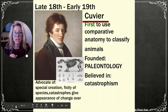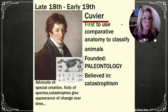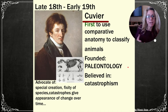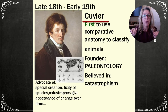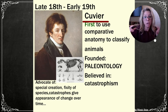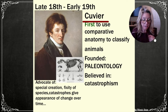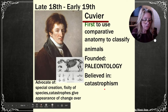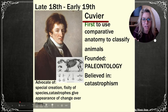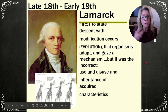Cuvier was the father of paleontology. He believed in catastrophism — that major catastrophic events occurred, and what looks like change over time is simply repopulation after a catastrophe wiped out species. He used comparative anatomy for classification, founded paleontology, but still believed in fixity of species and special creation. Catastrophes with repopulation give the appearance of evolution.